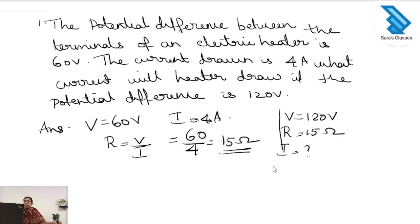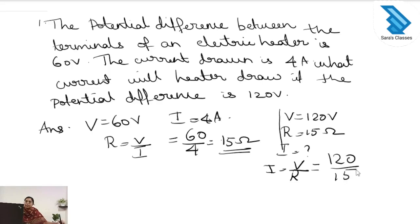The relation for current is I is equal to V divided by R. V is 120 and the resistance is 15, so the answer is 8 ampere.